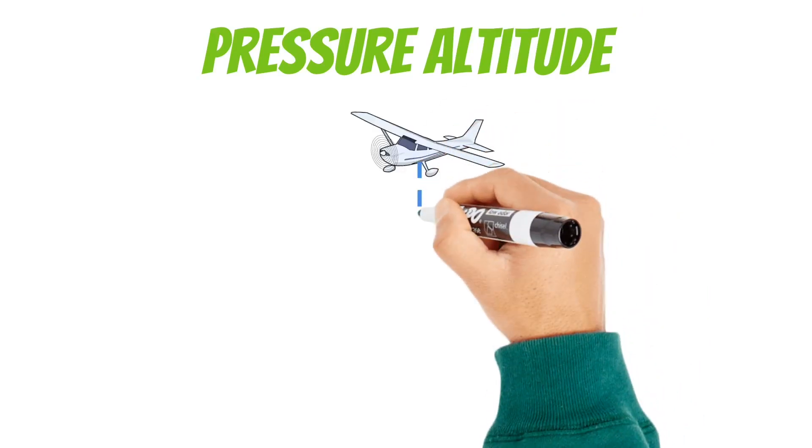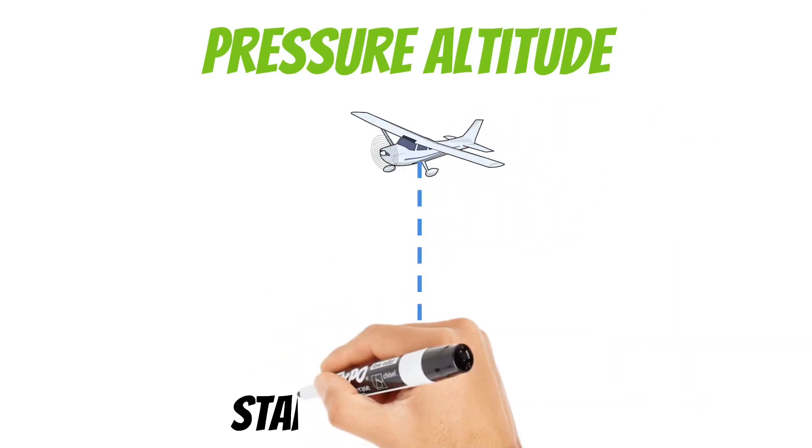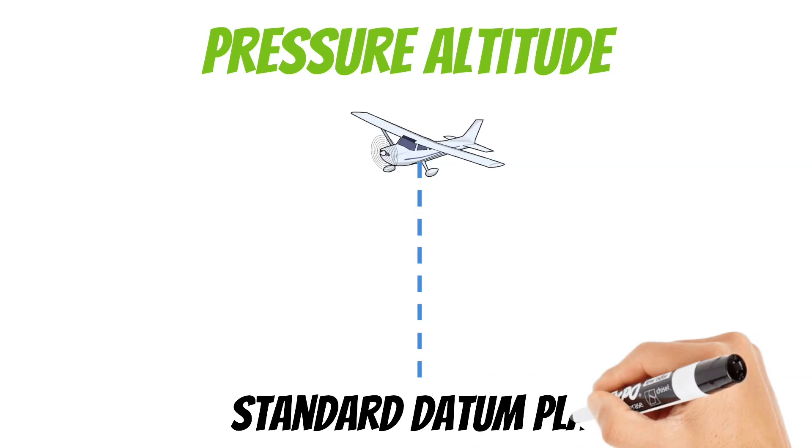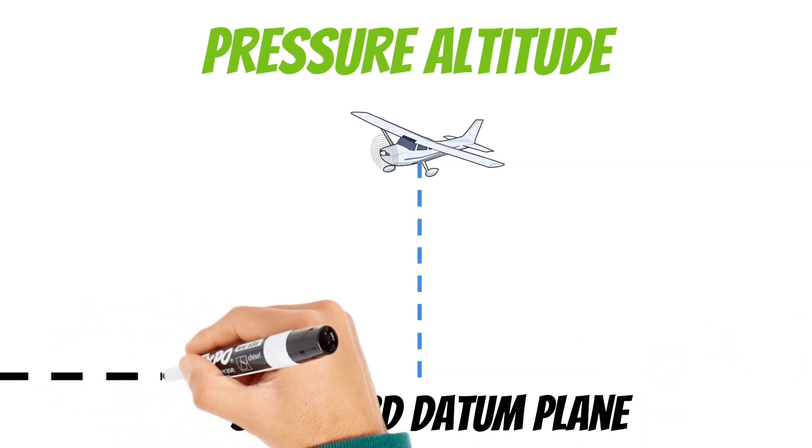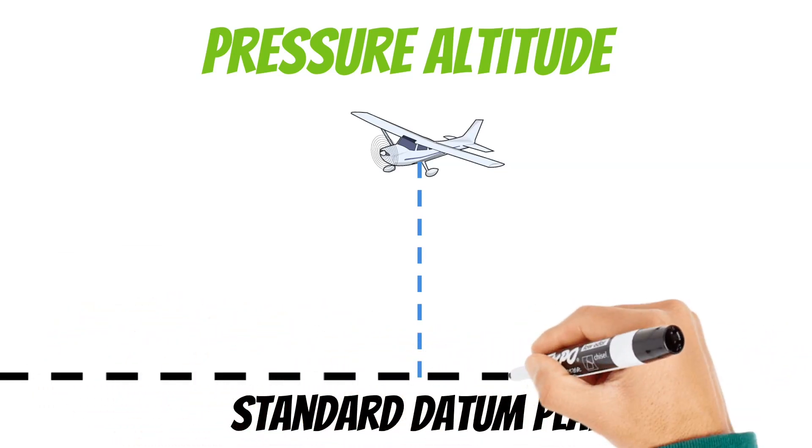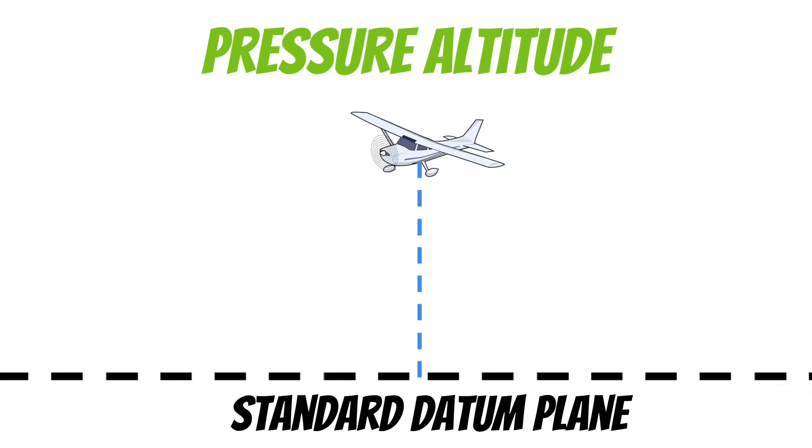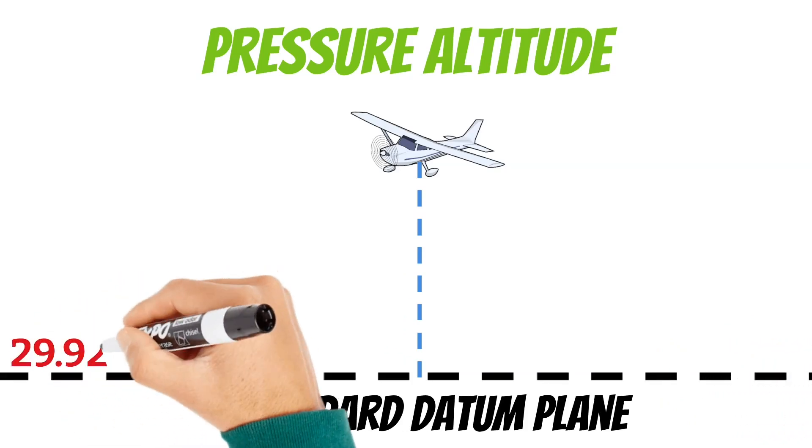The next type of altitude that you need to be familiar with is called pressure altitude. Pressure altitude is the height of something above the standard datum plane. This is an imaginary line that we draw where the air pressure equals 29.92 inches of mercury.